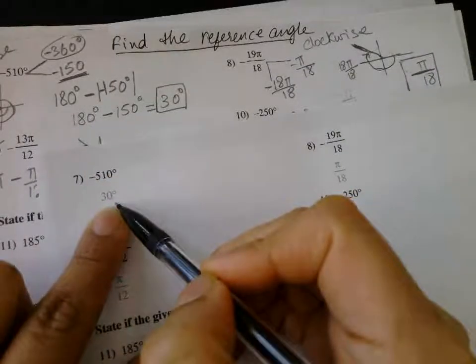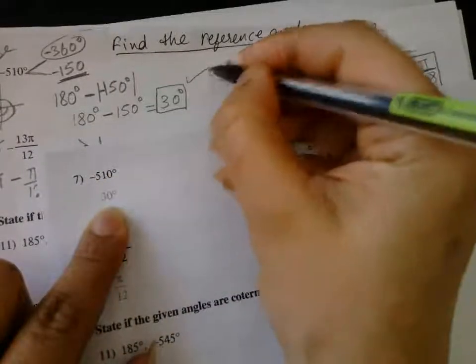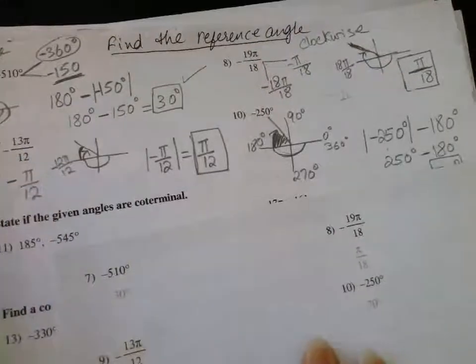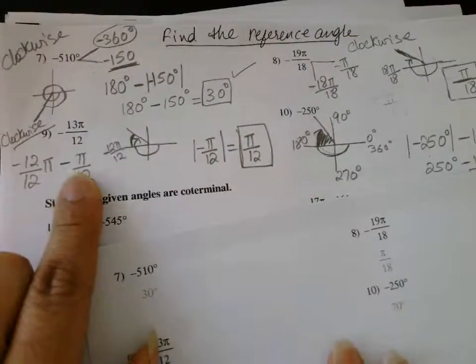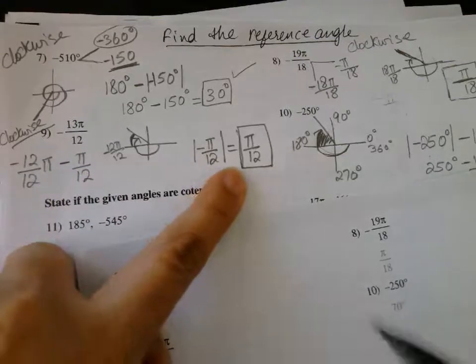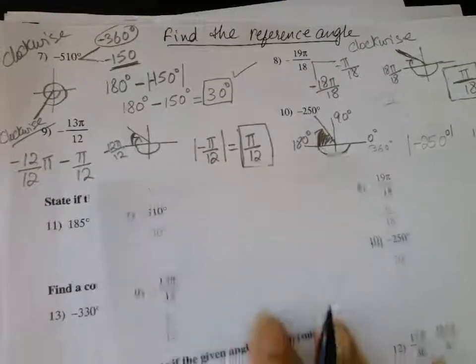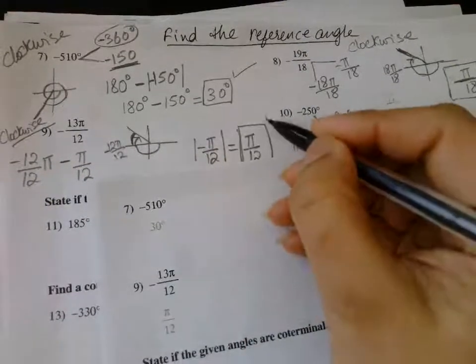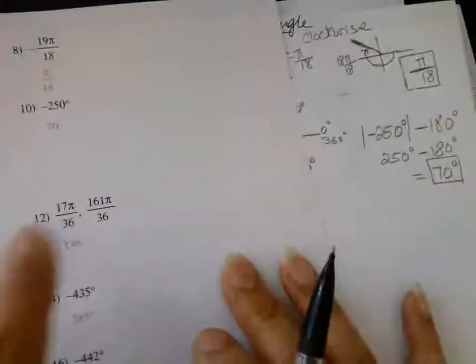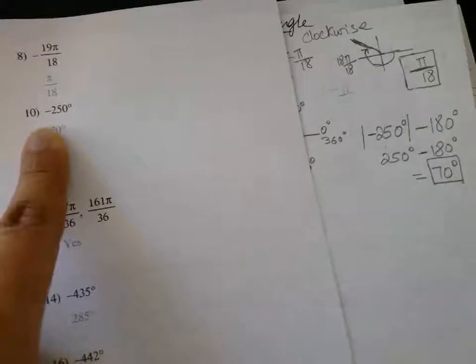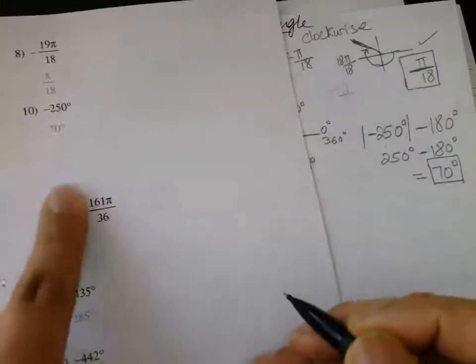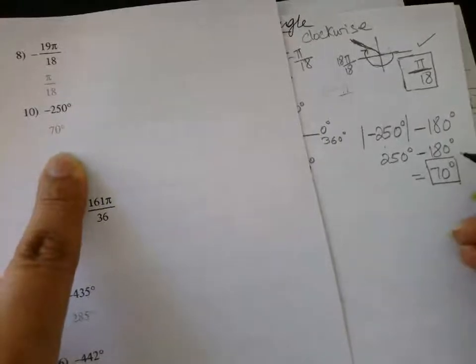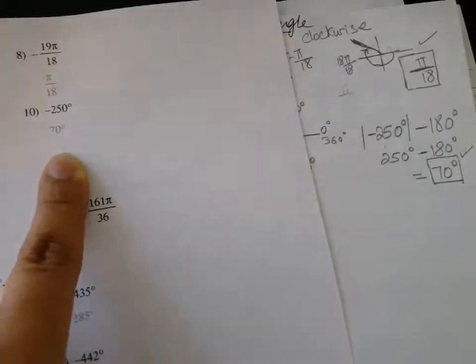Let's check our answers with the answer sheet. Question 7: our answer is 30° — correct. Question 9: our answer is π/18 — correct. Question 8: our answer is π/12 — correct. Question 10: 70° — correct.